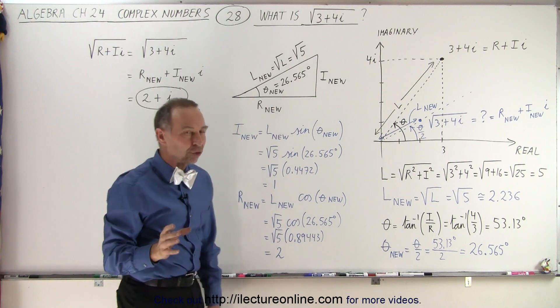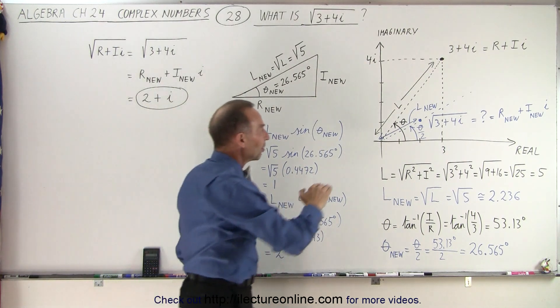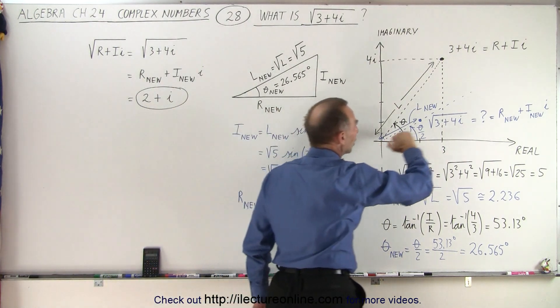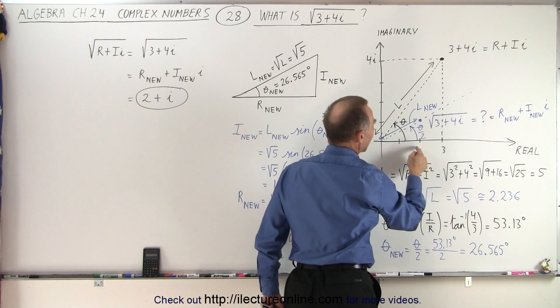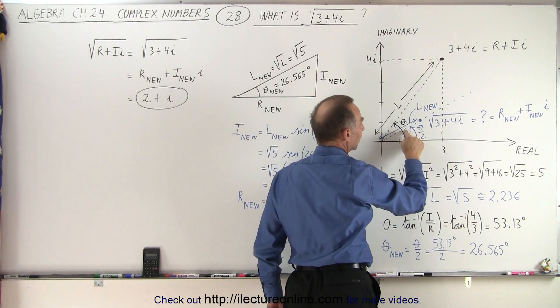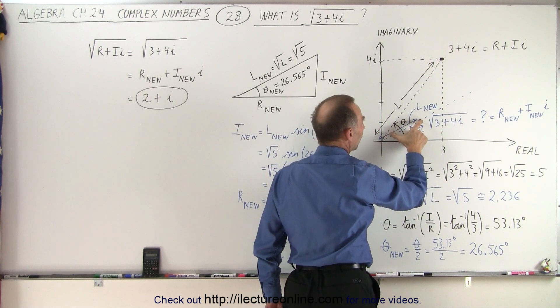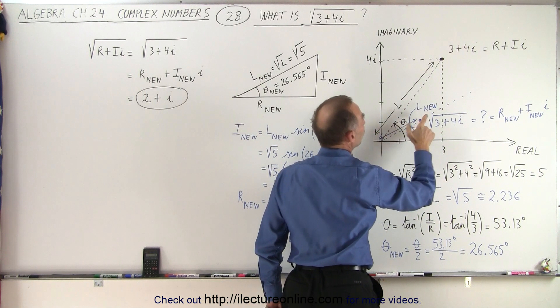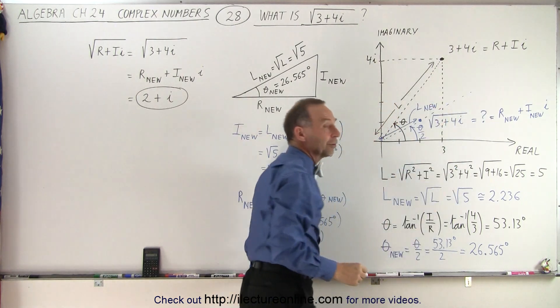Now we know that if we take the square root of that number, it will be somewhere along the line that is made when we take half the angle, and the distance to the point will be the square root of the original distance to that point.